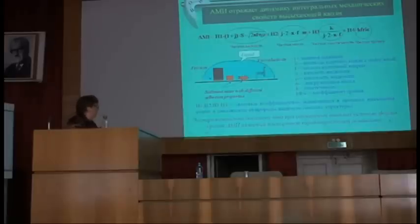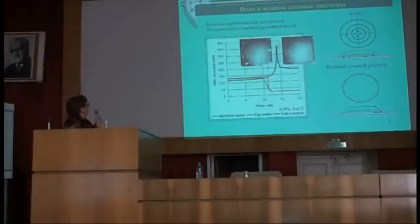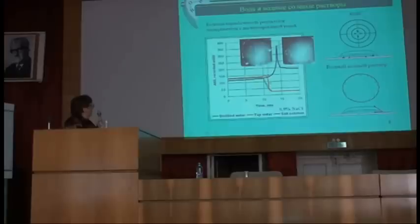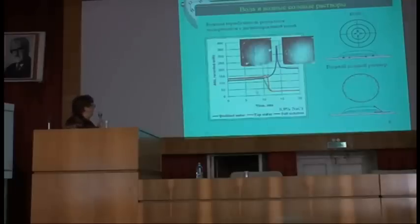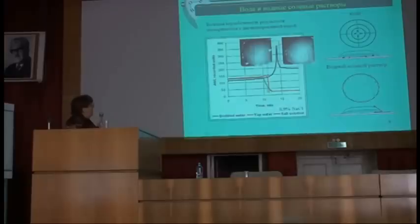Экспериментально доказано, что при одинаковых внешних условиях форма кривой АМИ является паспортной характеристикой жидкости. Здесь показаны кривые АМИ, типичные для дистиллированной воды (зелёная), водопроводной воды (оранжевая) и физиологического солевого раствора хлорида натрия. Эти кривые имеют различия. Чистая дистиллированная вода имеет очень низкую воспроизводимость результатов — кривая состоит из горизонтальной и не спадающей составляющих.